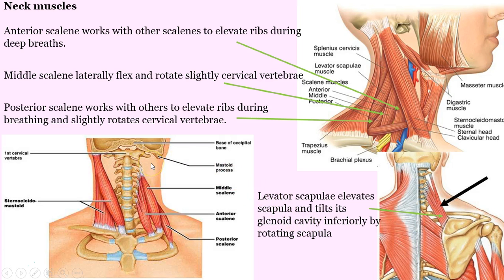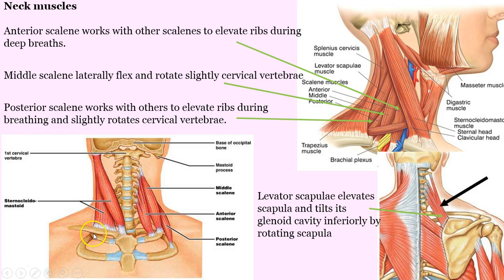Scalenes — we don't see the scalenes as they tend to be deep. Their action is to elevate the ribs during deep breaths. Look at the attachment points here on the upper ribs. When these muscles shorten, with their attachment to the cervical vertebrae, they're going to elevate the ribs, which helps with the expansion of the lungs and breathing.